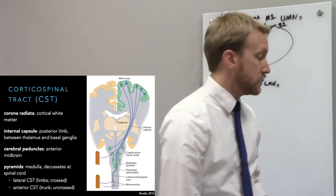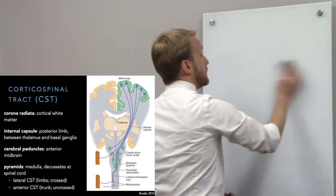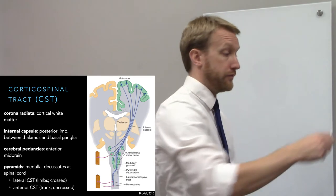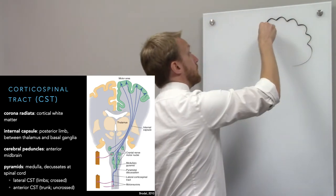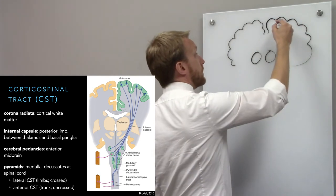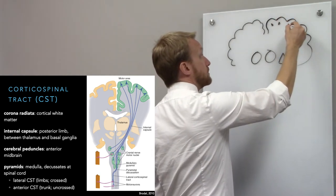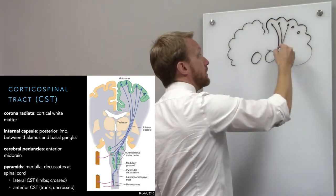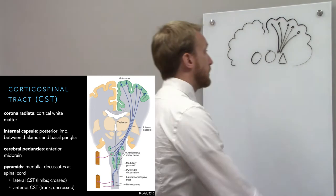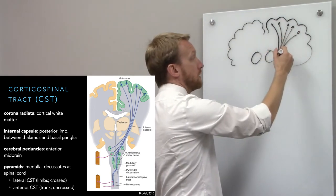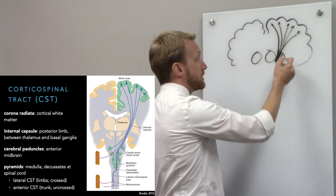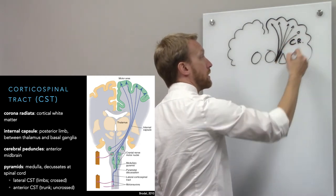The corticospinal tract goes from layer 5 in the cortex down through the cortical white matter, through the brain stem, and down into the spinal cord. We start with the big pyramidal neurons projecting downward. This white matter tract is called the corona radiata — a radiating crown of cortical white matter. The fiber bundle is then collected in the internal capsule, which runs between the thalamus and the basal ganglia.